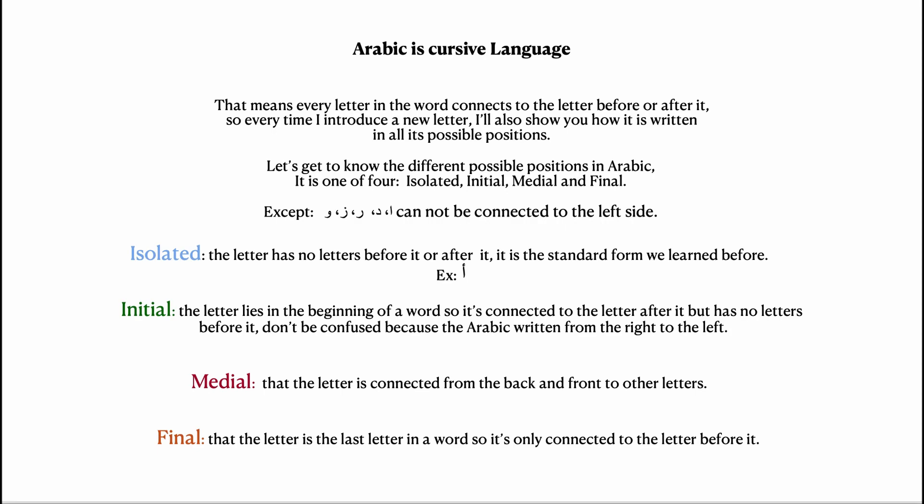The isolated form means the letter stands by itself with no letters before or after it — for example, alif by itself. Initial means the letter is at the beginning of a word, connected to the letter on its left side. Medial means the letter is in the middle, connected from both sides. Final means it's the last letter in the word, connected only from before it. Remember, Arabic is written right to left.